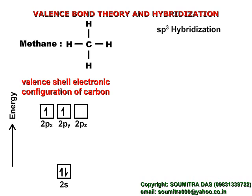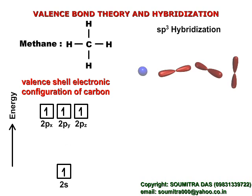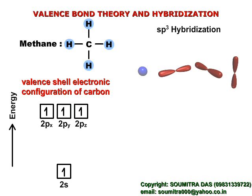One electron is promoted from the 2s level to the 2p level like this. After this step, what we see is that there are no valence shells left with an electron pair — there are only 4 half-filled orbitals. There are also 4 hydrogen atoms to be bonded with the central atom.